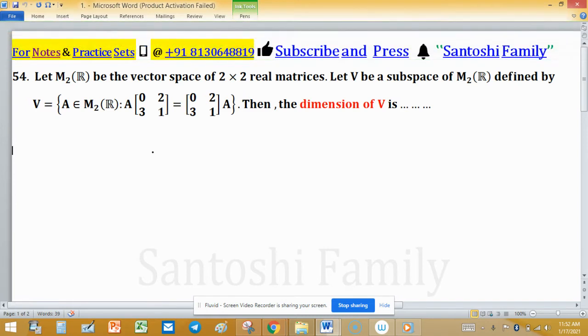Dimension of a vector space is the number of elements in basis. Sometimes to find basis is a lengthy process, so we can easily find it by the number of linearly independent choices.